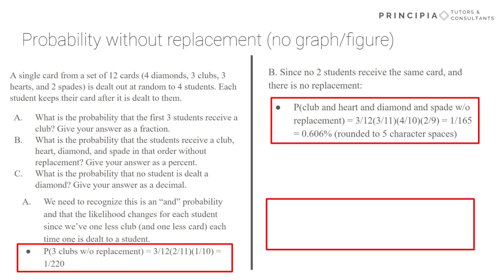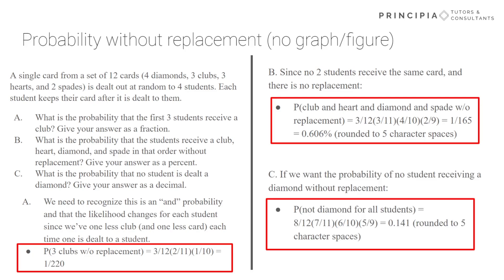Finally, no student being dealt a diamond. Again, we sum the total non-diamond options, but then as we draw a not-diamond, we have to reduce that number and the total number of cards. And so starting with eight over 12, but then it becomes seven over 11, and you keep reducing by one in the numerator and denominator until you've multiplied out four times, resulting in 0.141 when rounded to five character spaces, and it gives the answer as a decimal.